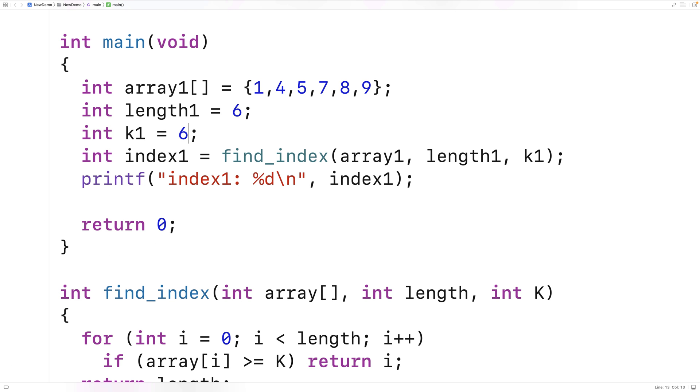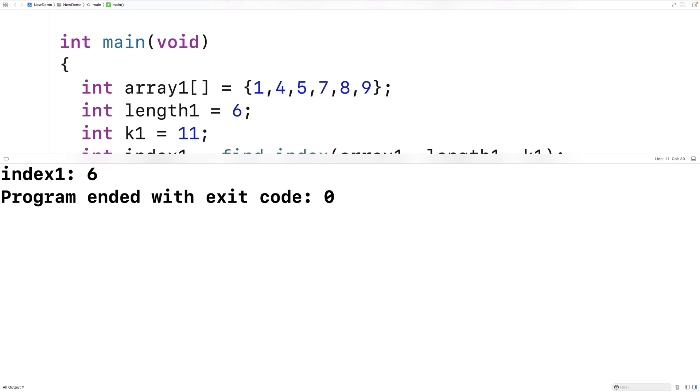Let's try the case that the K value is greater than everything in the array. So we'll try 11. In this case, we should get back index 6. Because once we go through the entire array, the next element would be at index 6. And so K should go here. We'll save this and run it. And again, we get back the correct answer, index 6.